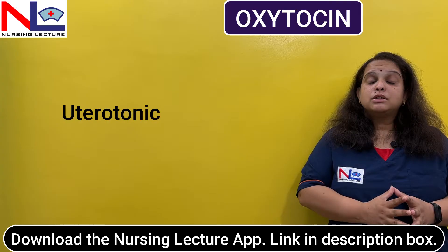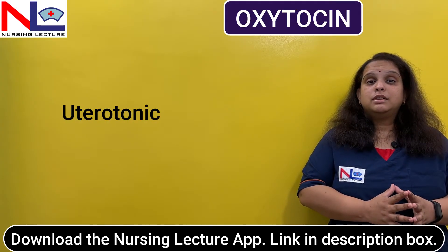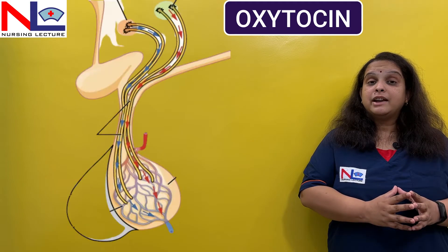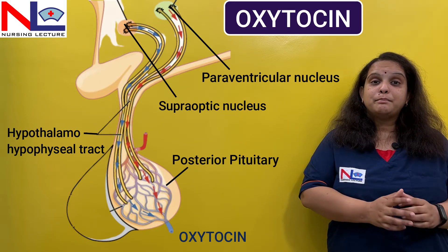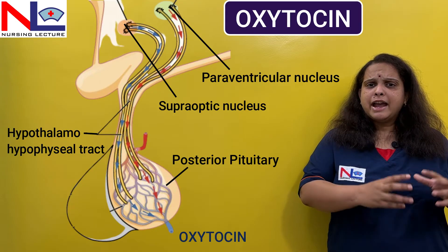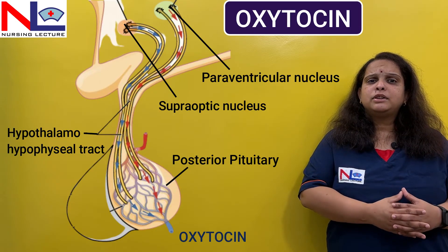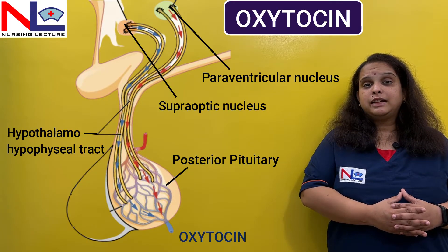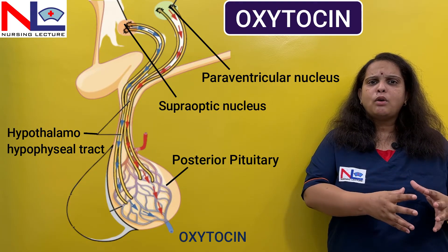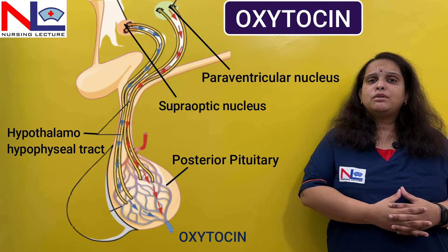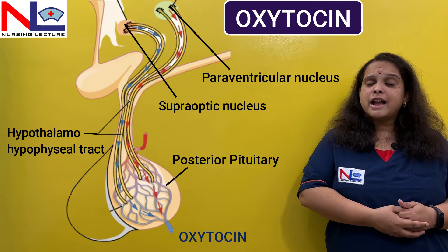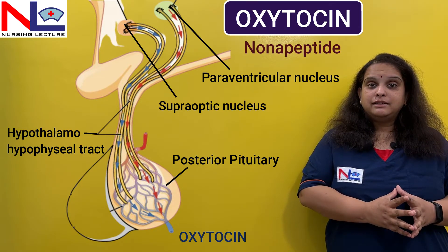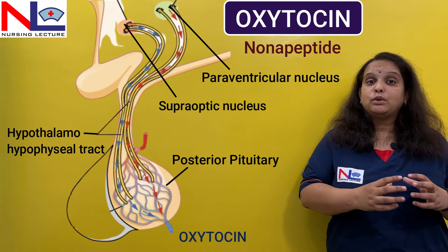Oxytocin is also synthesized naturally. It originates from the hypothalamus, from the supraoptic and paraventricular nuclei, and from there it is transported through the neuronal axons and reaches the posterior pituitary where it is stored or released. Naturally it is a nonapeptide formed by a nine amino acid sequence.